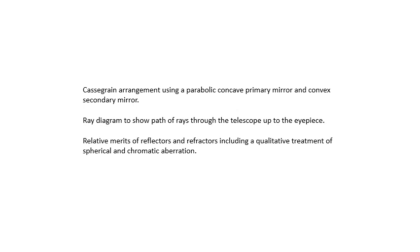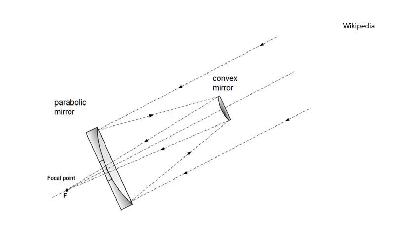Don't worry about that. Basically there are two mirrors: a parabolic mirror and a small convex mirror. I'll show you how to do the ray diagram, and we're going to talk about advantages and disadvantages of reflecting and refracting telescopes, and we'll know what spherical and chromatic aberration are. Let's do it.